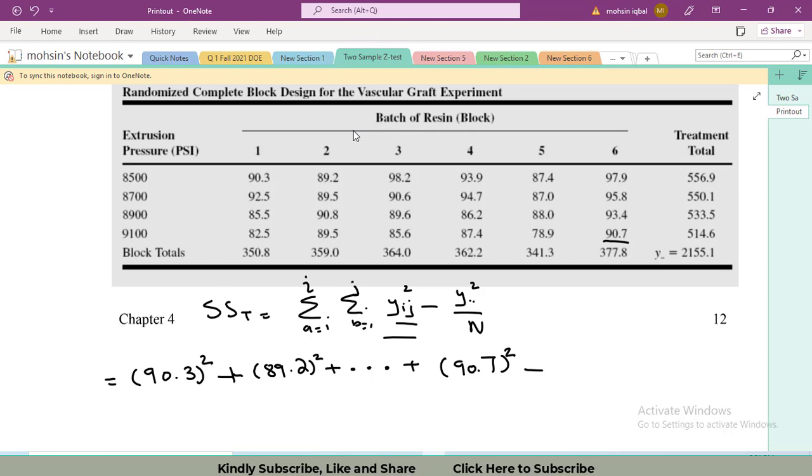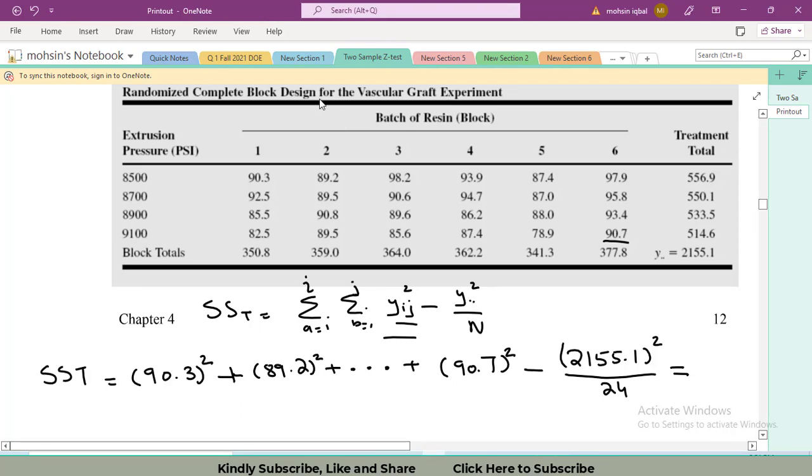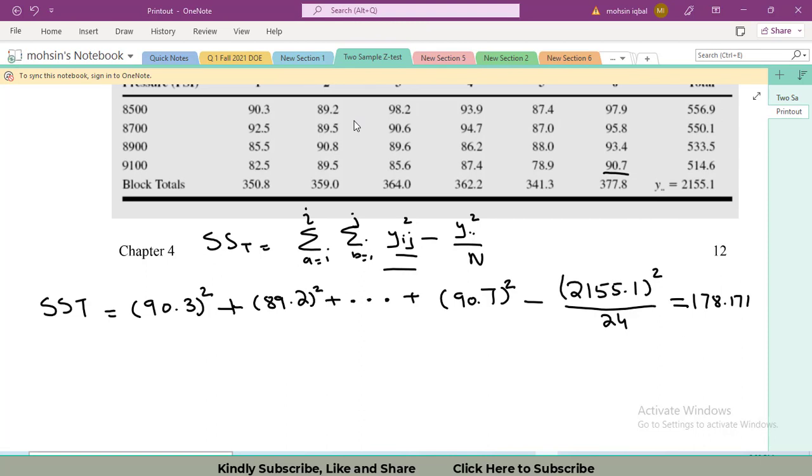I have used this summation sign there. Minus, y dot dot. It's the overall summation of this data. Here it is written 2155.1. As per the formula, I have to also take the square of it and then divide it by n where n is the total number of observations equal to 24. The sum of squares total value comes out to be 178.171.